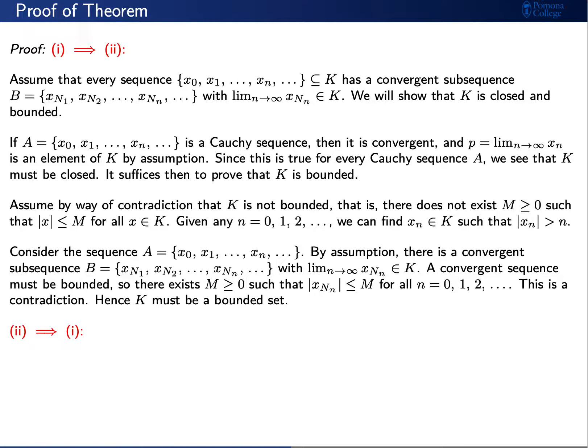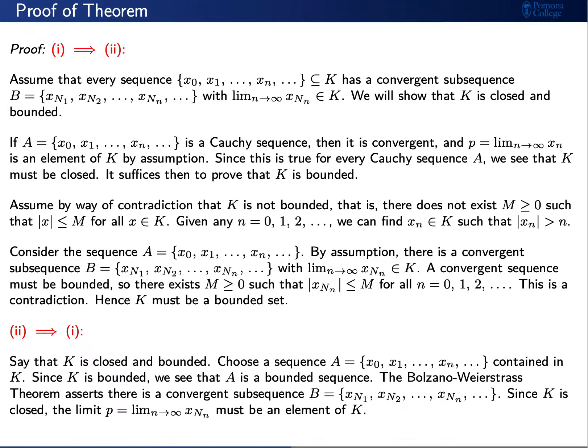Now let's go in the opposite direction and prove that statement two implies statement one. Assume that K is closed and bounded. Choose any sequence A contained in K. Since K is bounded, the sequence A is bounded, and the Bolzano-Weierstrass theorem guarantees a convergent subsequence B. Since K is closed by assumption, its limit must also be an element of K. Hence every sequence contained in K has a subsequence that converges to an element of K, so statement one must be true.